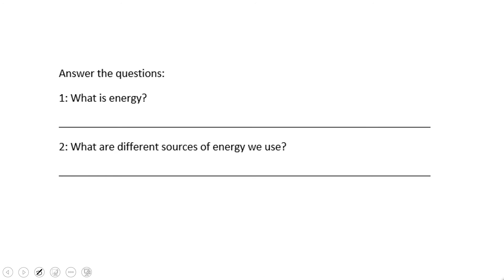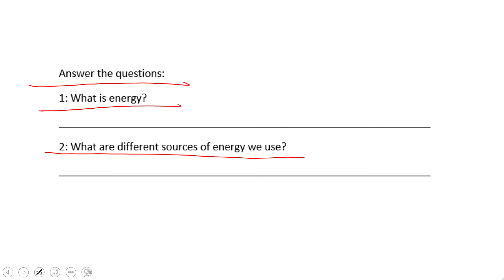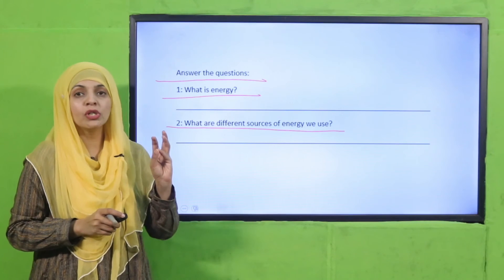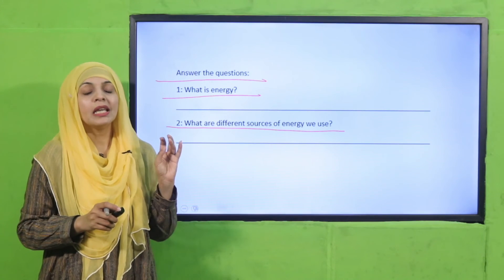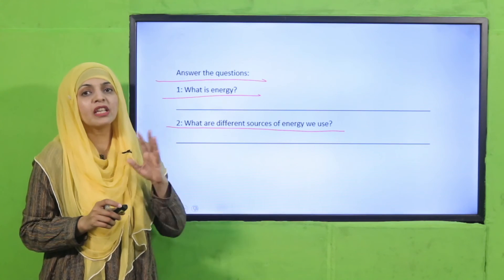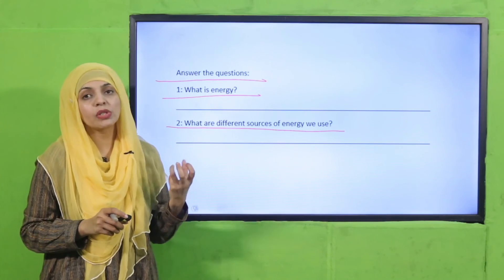Now we will move forward towards the question answers in the worksheet. Answer the questions: what is energy? Energy is required for doing work. What are the different sources of energy we use? Food, electricity, solar energy, thermal energy, heat energy, and fuel — these are all different forms of energy that we use in our daily life.